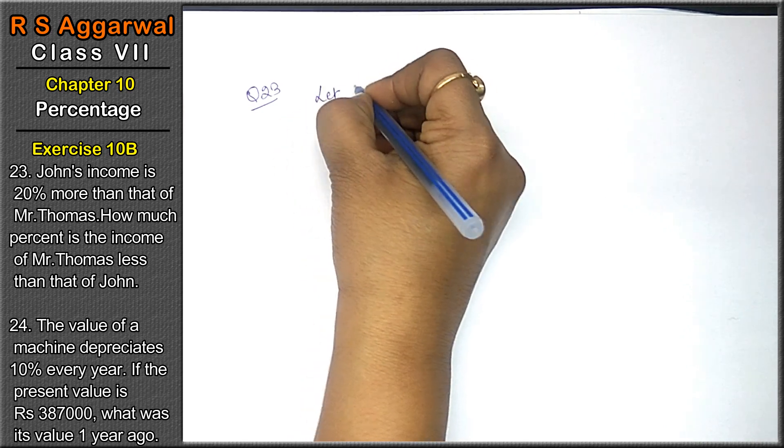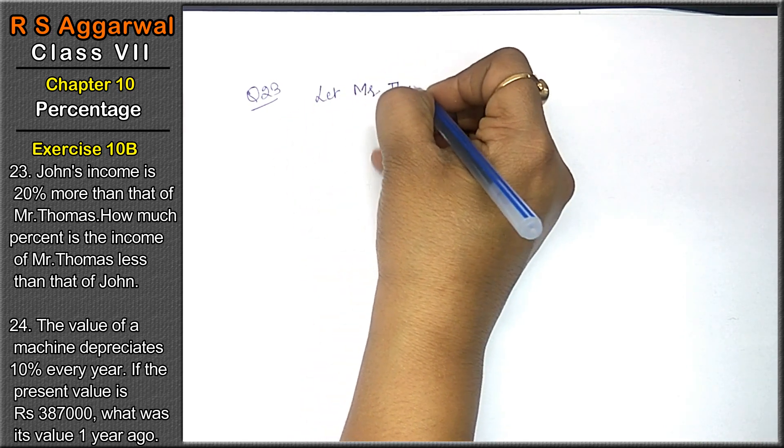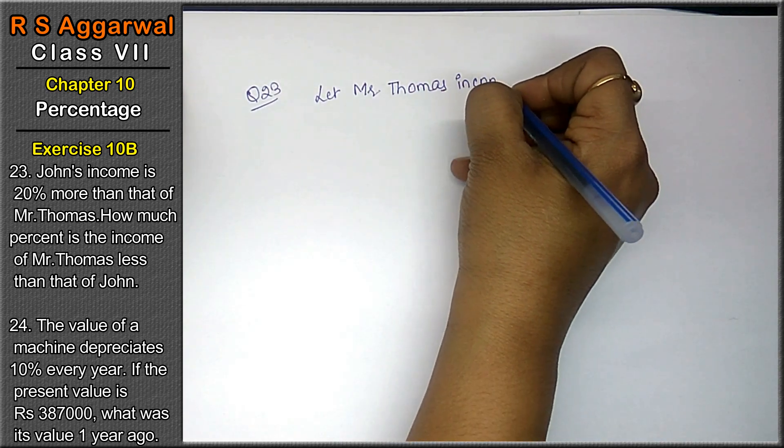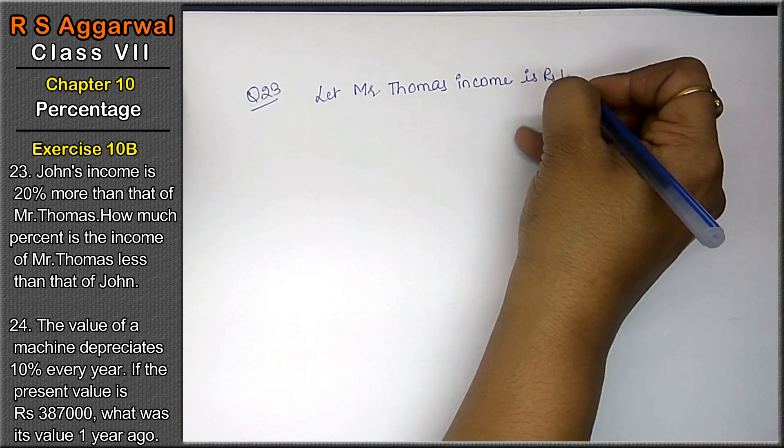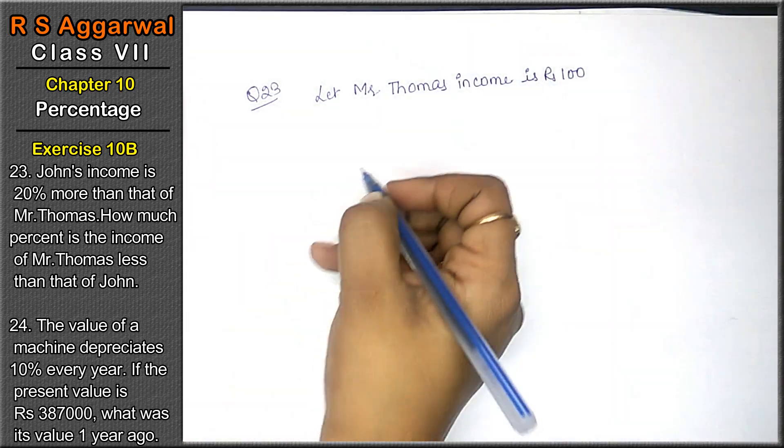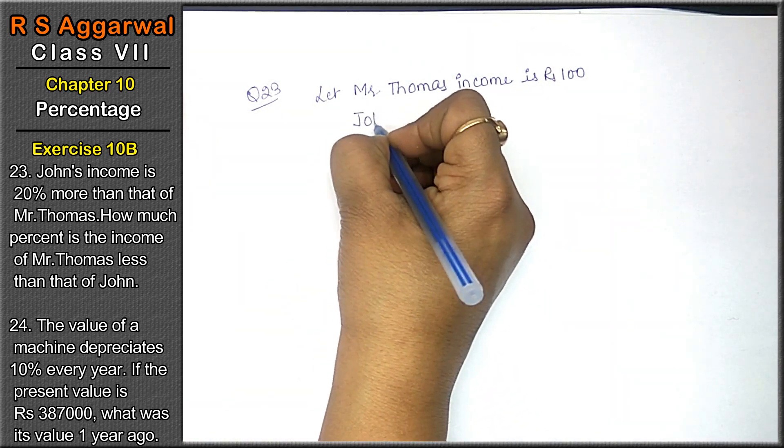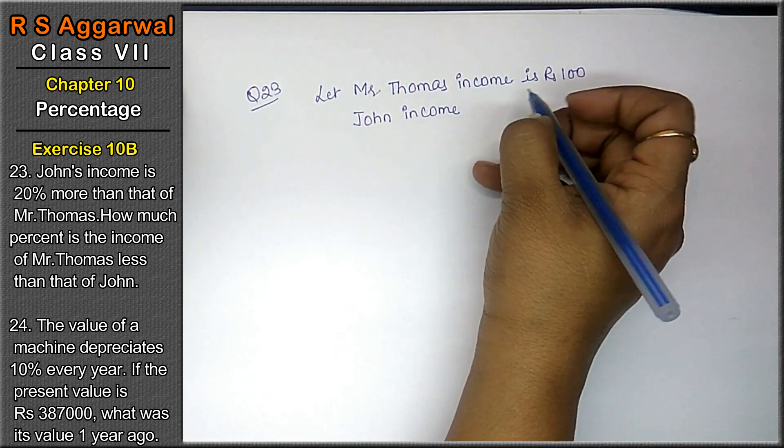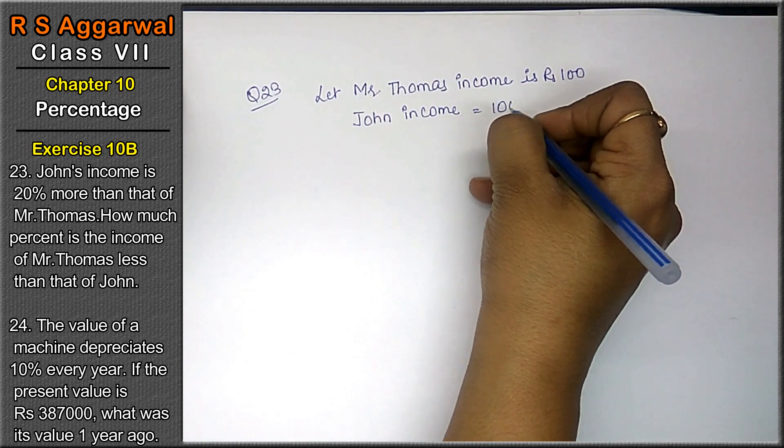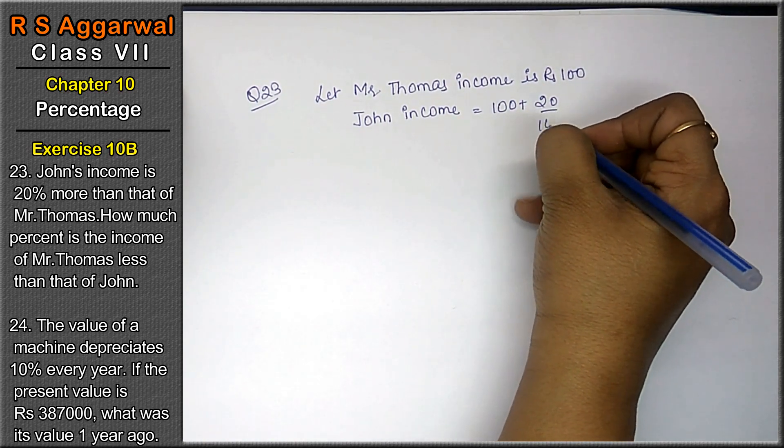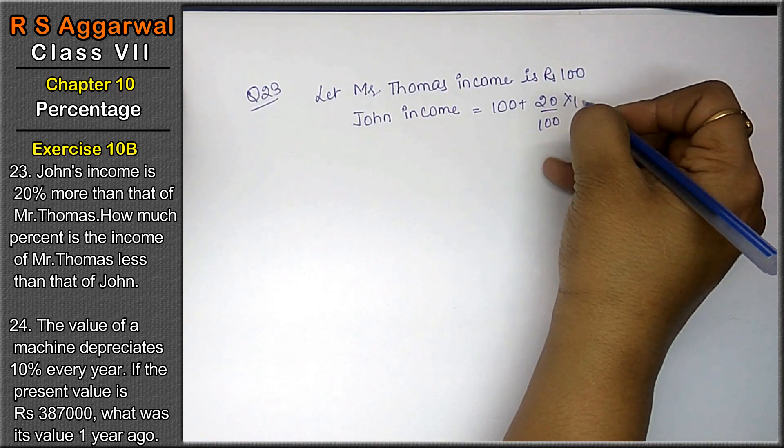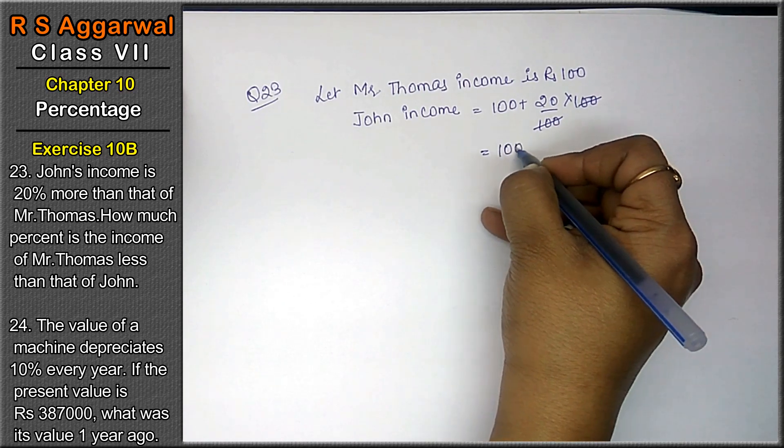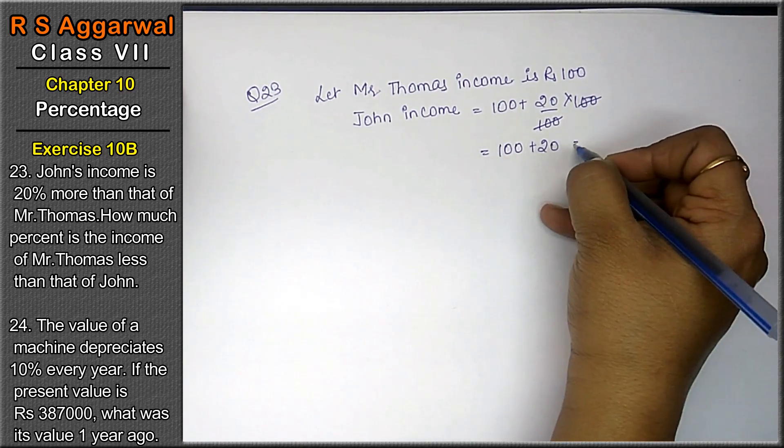Hence, let Mr. Thomas's income is Rs. 100. Right friends, so John's income is 20% more. So 100 plus 20% of Rs. 100, that means Rs. 100 plus 20, equals Rs. 120.